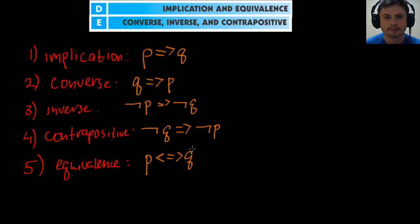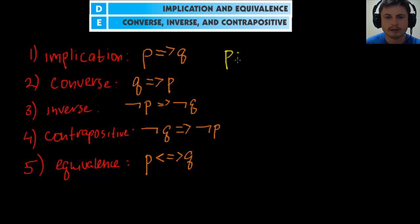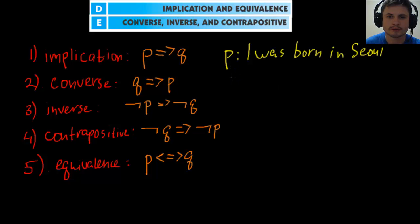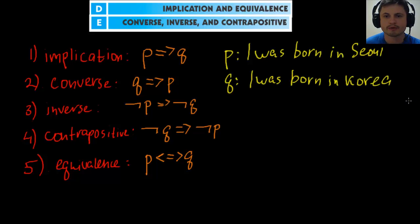Now let's talk about these in more detail, starting with implications. I'll use a simple example: P is 'I was born in Seoul,' and Q is 'I was born in Korea.' So P is our first statement, Q is our second, and we'll make a truth table from a previous video's method.